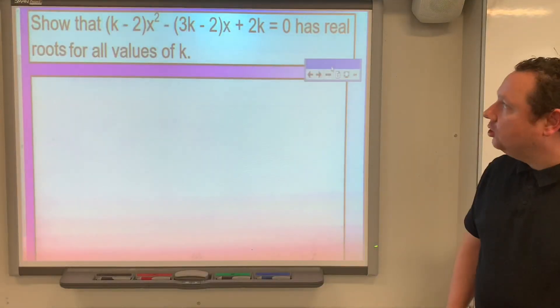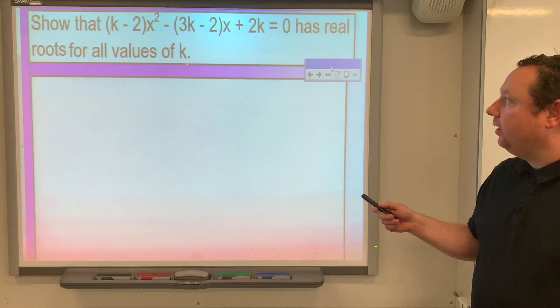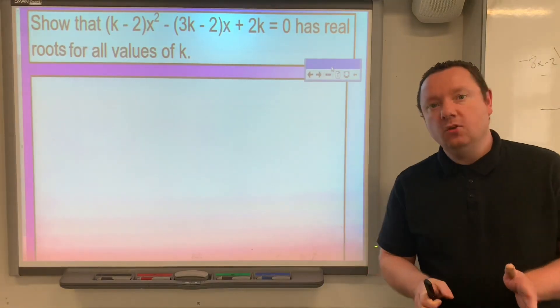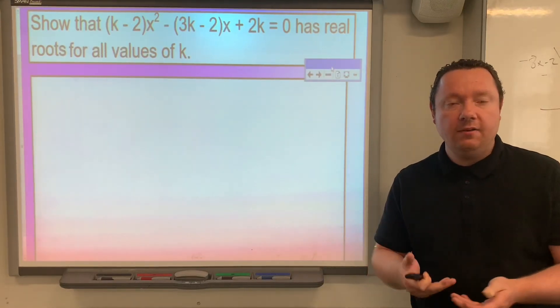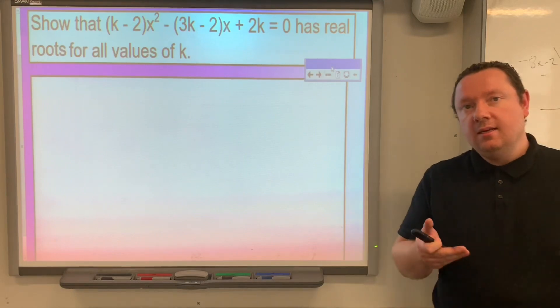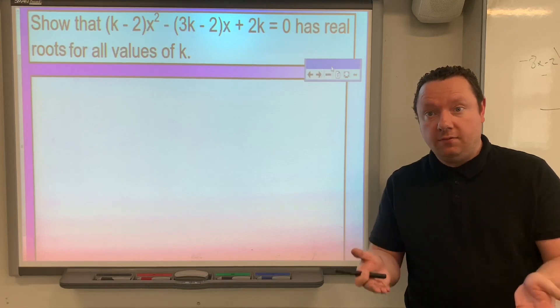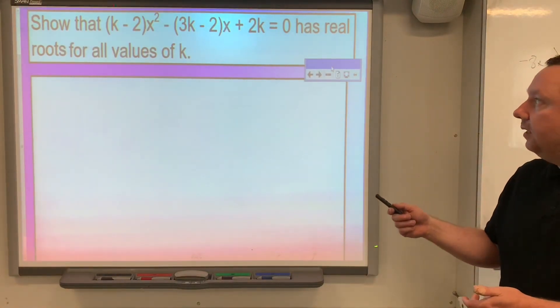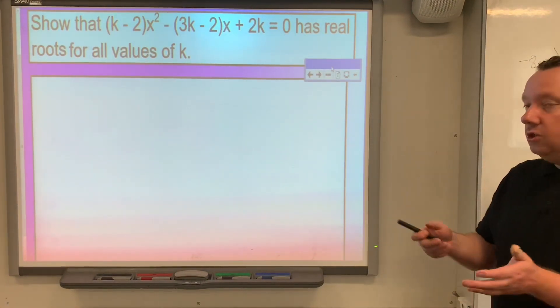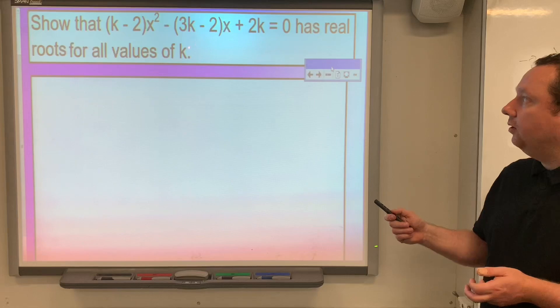Example 3: show that (k minus 2)x squared minus (3k minus 2)x plus 2k equals 0 has real roots for all values of k. Now before we get into this, it's worth noting that if we work out the discriminant and we get a perfect square like 16, 25, 36, that means it's got real roots because if you square root a perfect square like 36, it's obviously got a positive and negative answer. So if we can somehow work out what the discriminant is and make sure that it's a perfect square by completing the square, we'll then have proved that it has real roots for all values of k.